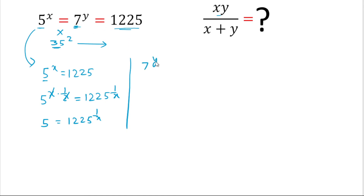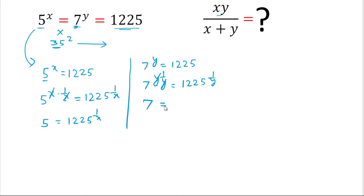Likewise, from 7 powered by y equals 1225, we power both sides by 1 over y. The y and 1/y cancel, giving us 7 equals 1225 powered by 1 over y. This is equation 2.